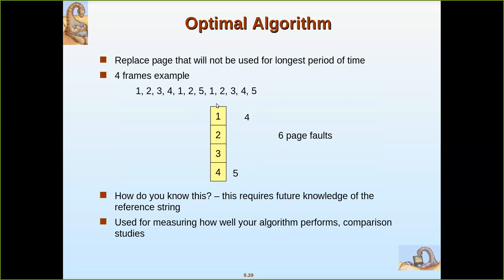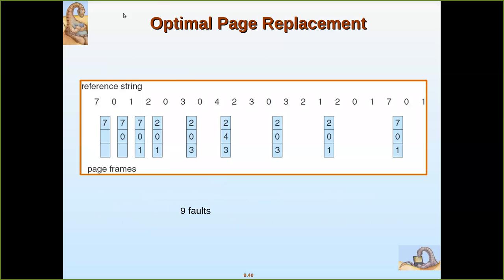Now when we come across the next references, there is no page fault — page fault is avoided. Page 2 is already there, page 3 is already there. Now comes page 4 again. At this point you cannot replace page 5 because we need to check if there are further references. So you must have future knowledge — whether a particular page will be referred again or not. With that knowledge only can the optimal algorithm work. Let me explain with another string that we have seen for FIFO.